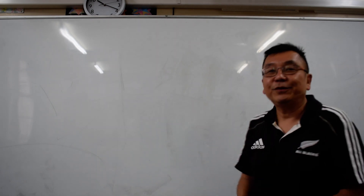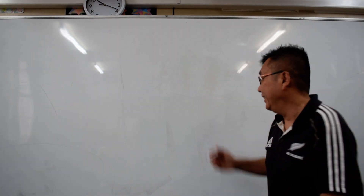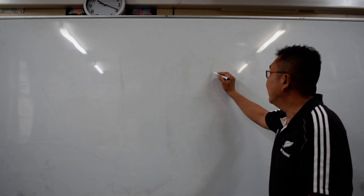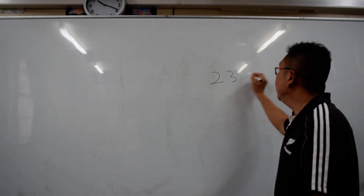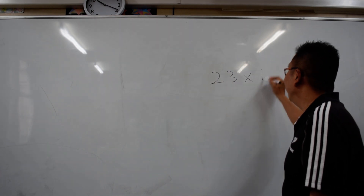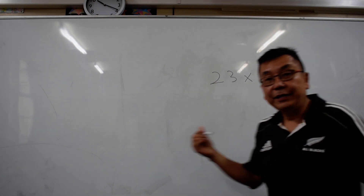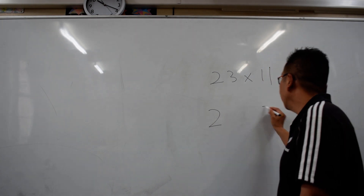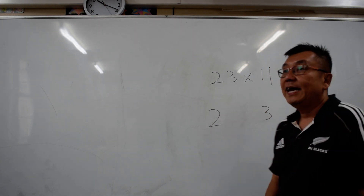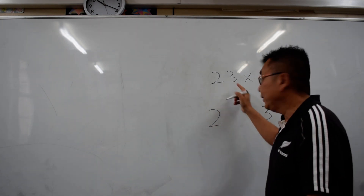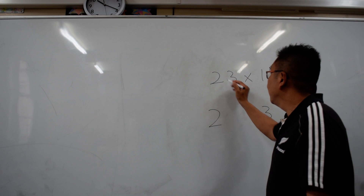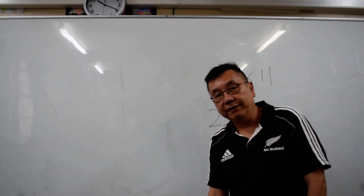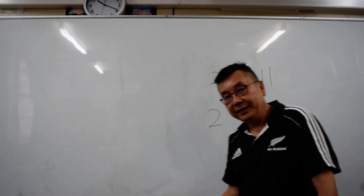Next we are going to do multiplication of 11. 11 is simpler still. If I have 23 times 11, what I do is the 2 and 3 remain the same at the corners, and I just add 2 and 3 together. So 2 plus 3 gives the middle number 5, and the answer is 253.